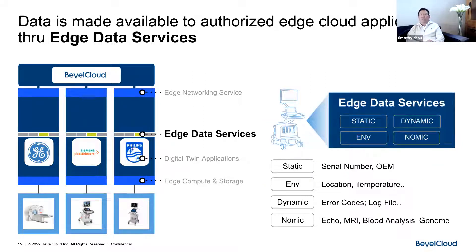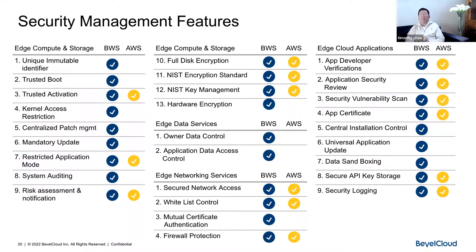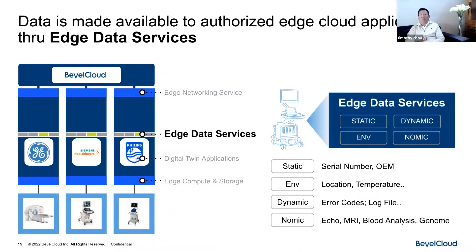The digital twins present data through what we call edge data services. There are four kinds of data: static information (e.g., serial number), environmental information (location), dynamic data (e.g., last error code, laser power level on a gene sequencer), and what we call nomic data — the actual echo, blood analysis, or gene sequence. All data in the machine is replicated into edge data services on the edge server, made available in a controlled and managed way.